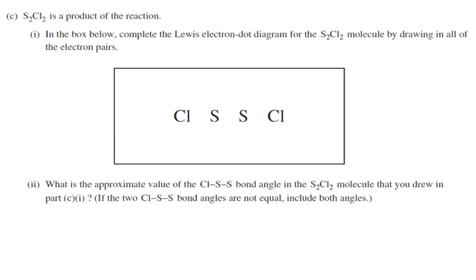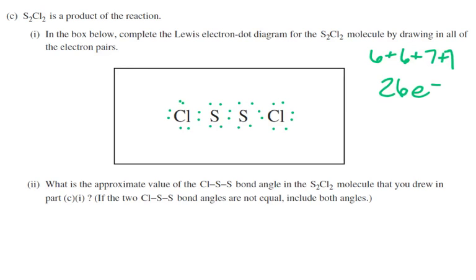Part C: S₂Cl₂ is a product of the reaction. Complete the Lewis electron dot diagram for S₂Cl₂ by drawing in all the electron pairs. My first step is always to give everybody an octet, because if there are enough electrons, that's what will happen. S₂Cl₂ has two sulfurs with six valence electrons each, and two chlorines with seven each. So altogether: 7 plus 7 is 14, plus 6 plus 6 is 26 total electrons to work with.